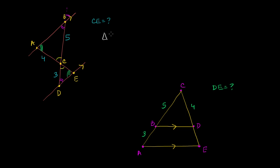We know triangle ABC is similar to triangle EDC. Vertex A corresponds to vertex E, vertex B corresponds to vertex D, and C corresponds to C. That tells us that the ratios of corresponding sides are going to be the same constant value. The corresponding side for BC is going to be DC.